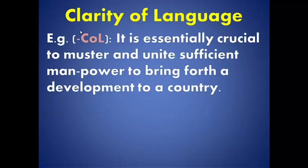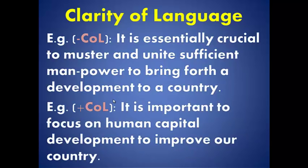Let's look at an example. Minus clarity of language means not applying clear language. For example: 'It is essentially crucial to muster and unite sufficient manpower to bring forth a development to a country.' When you apply clarity of language, it becomes: 'It is important to focus on human capital development to improve our country.' The second version is much more direct and the language is more appropriate. Notice that 'essentially crucial' is redundant — you only need one word, 'important.' This makes the argument easily understandable.